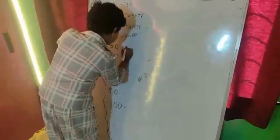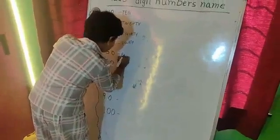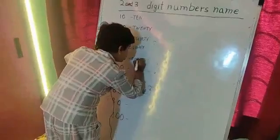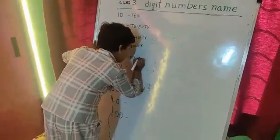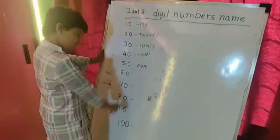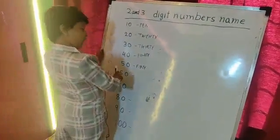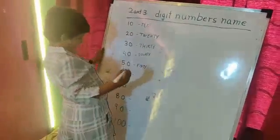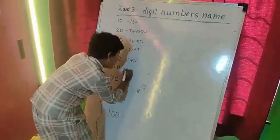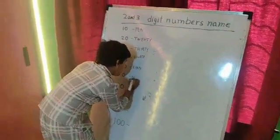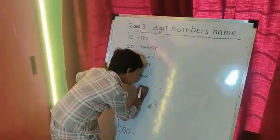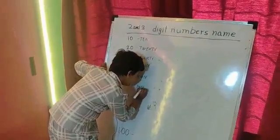F, I, F, T, Y. This is 50. And this is 60. S, I, X, T, Y.